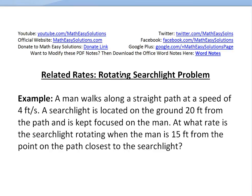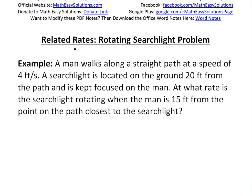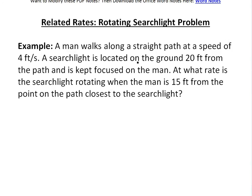It's time for another Math Easy Solution, here to discuss another related rates problem. We'll look at a pretty interesting rotating searchlight problem. A man walks along a straight path at a speed of 4 feet per second. A searchlight is located on the ground 20 feet from the path and is kept focused on the man. The question is: at what rate is the searchlight rotating when the man is 15 feet from the point on the path closest to the searchlight?